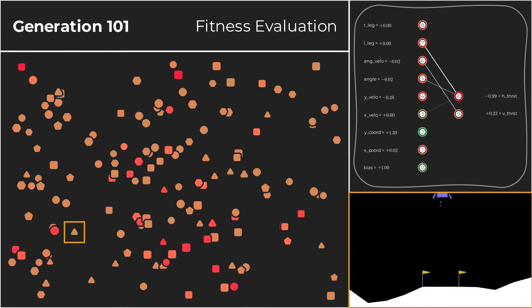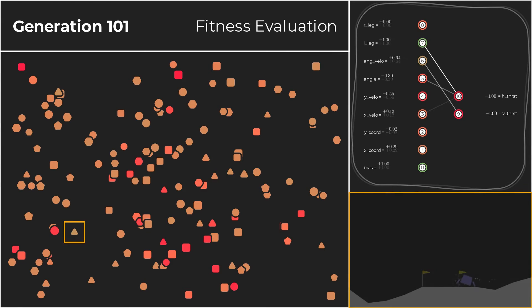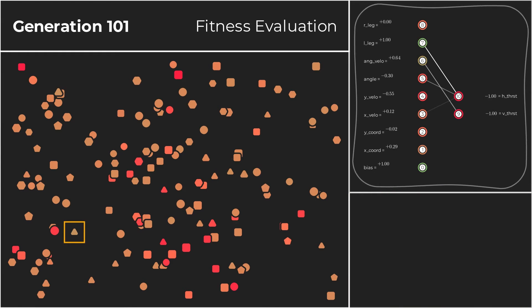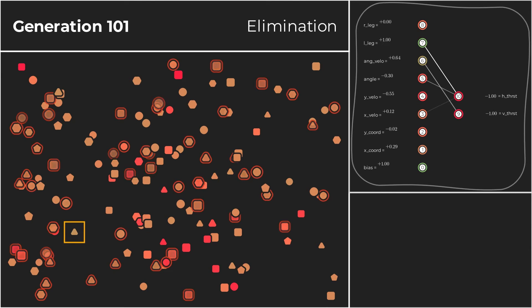However, this behavior seems to be more of a lucky coincidence than a well-thought-out strategy. Looking at its phenotype, we can see that vertical thrust only gets applied when angular velocity increases. In other words, the aircraft slows its fall whenever it tilts out of control. Since the tilt tends to increase throughout the fall, the aircraft just happens to apply downward thrust at the right moment to dampen its landing. While this approach seems to be working surprisingly well, we sure can do better.